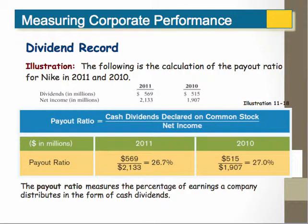From a ratio standpoint, one of the ratios that you may want to look at is called the payout ratio, which is the cash dividends declared on common stock divided by net income. This pretty much tells you how much the company pays out in dividends in relationship to how much money it makes.